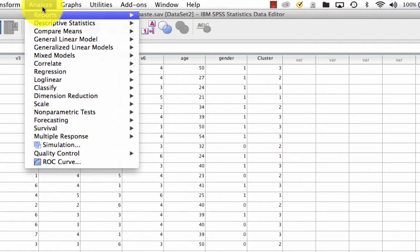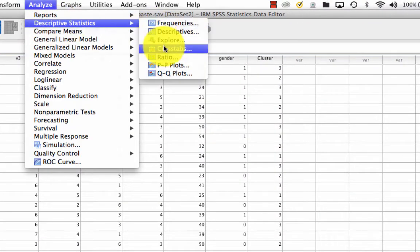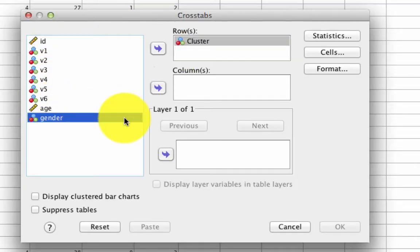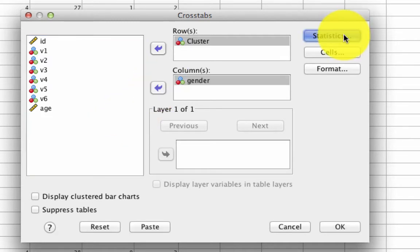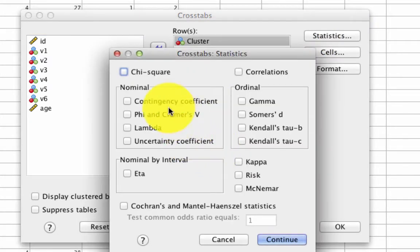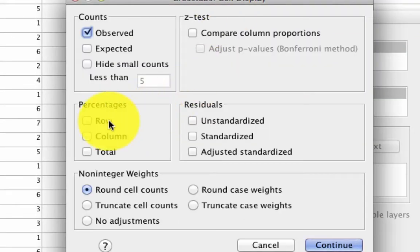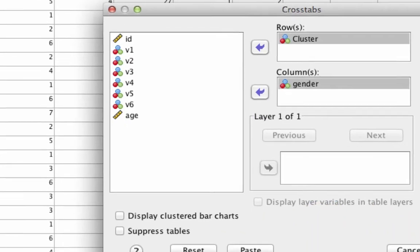So we go to analyze, descriptive statistic, crosstabs. And in one of these values, we're going to put cluster. And in the other, we're going to put gender. In the statistics window, we're going to ask for the chi-square table. And for cells, we're going to ask for the row, the column percentages, as well as the standardized residuals. This is what we ask for every time we run a crosstab. And so we do this.